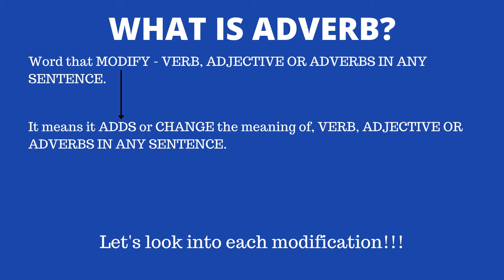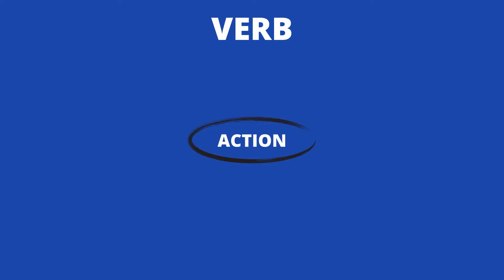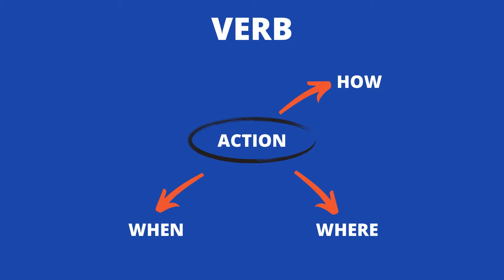How does an adverb modify a verb, or describe an action performed by any subject? There are four ways in which an adverb modifies or describes: number one is 'how' an action is performed, number two is 'where' the action is performed, number three is 'when' the action is performed, and number four is 'how often' or how frequently the action is performed.